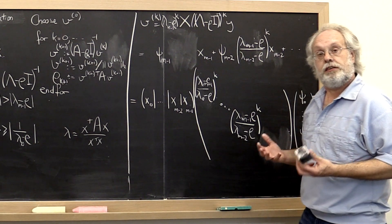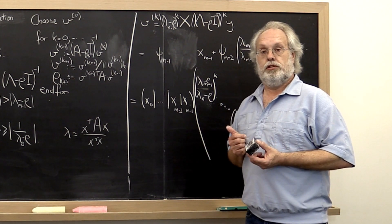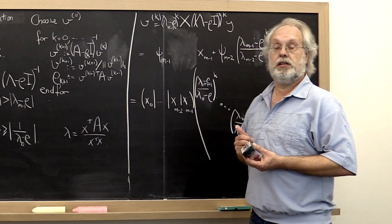And this gives astonishingly fast convergence. And it's known as the Rayleigh Quotient iteration.